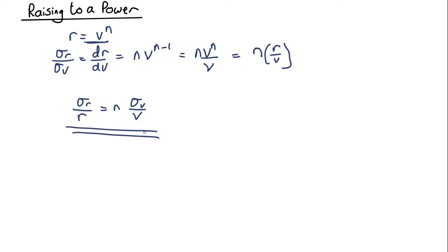So that's the fundamental equation for raising things to a power. You take the fractional uncertainty in your input variable, multiply by the power, and that gives you the fractional uncertainty in your result.